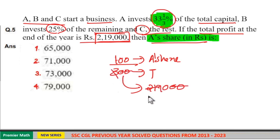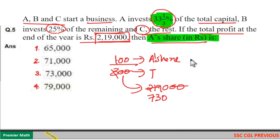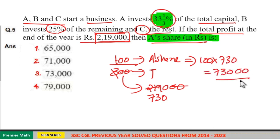One part is 730. Then 100 part is equal to A's share, that is 100 into 730 which is 73,000.